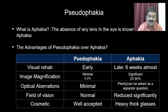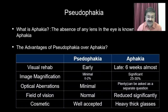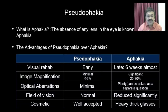Aphakia is the absence of the lens in the eye. The question of advantages of pseudophakia over aphakia arises because in the course of questioning you may be asked: what if the patient were not given a lens after surgery? Pseudophakia is definitely advantageous — visual rehabilitation is much earlier, with the patient recovering by the second week, whereas in aphakia about six weeks are required. Image magnification is minimal with an IOL in the physiological position, whereas aphakic glasses cause magnification in the order of 25 to 30 percent.